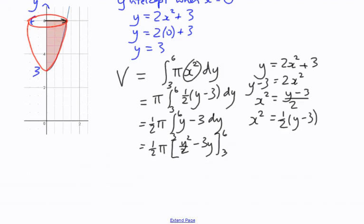It's just a matter of substituting. Substituting 6, and we get 6-squared over 2 minus 3 times 6 minus 3-squared over 2 minus 3 times 3.